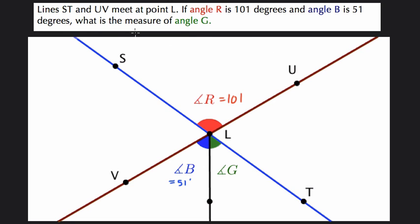And we want to find the measure of angle G. Well, because these two lines cross here, we're given basically vertical angles.